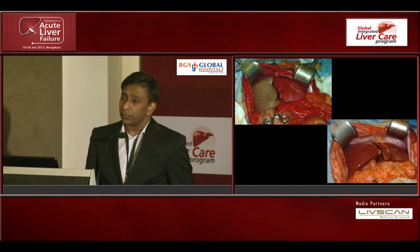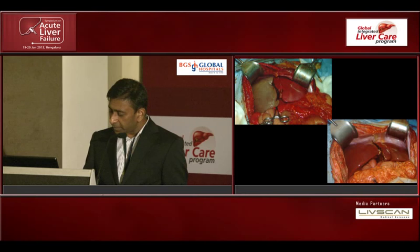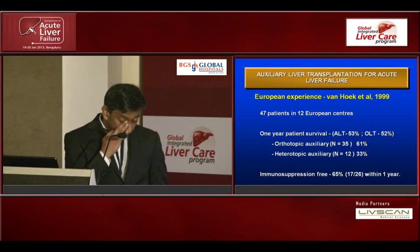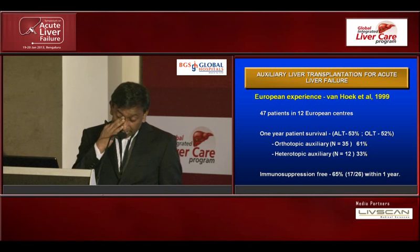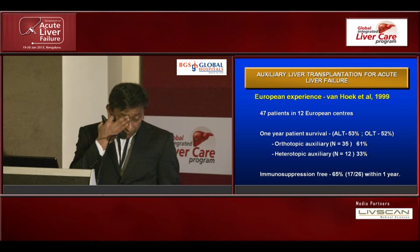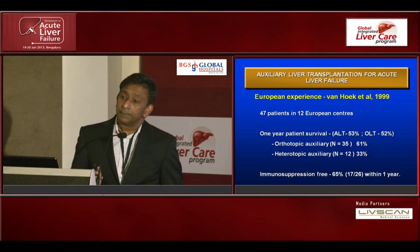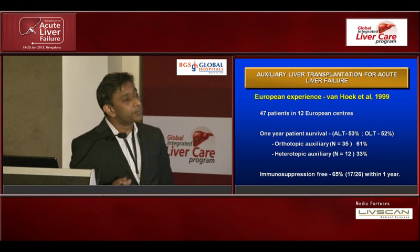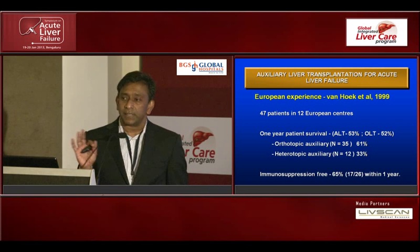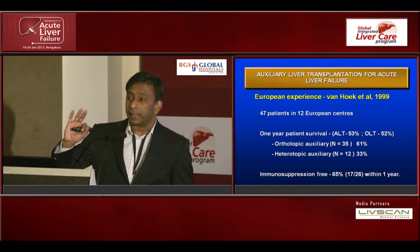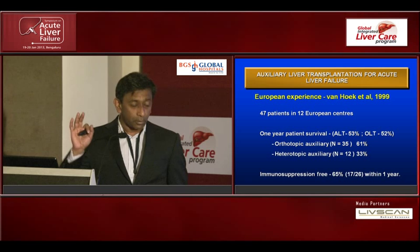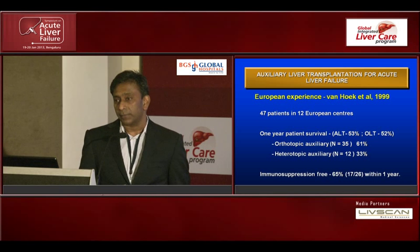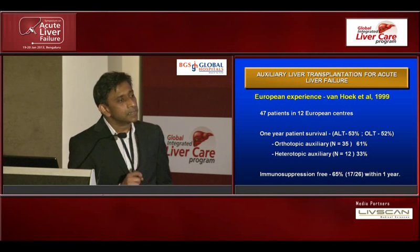So there are different ways of doing auxiliary — left lateral segment, whole left lobe, or right lobe — with specific indications for each. Before I go into the results, I should say we probably have the biggest experience in the world. I've done most of the auxiliaries at King's, and we have more than half the world's experience — probably about 70 auxiliary liver transplants for acute liver failure and about 25 for metabolic liver disease. The whole world has done fewer than 150 auxiliary liver transplants.